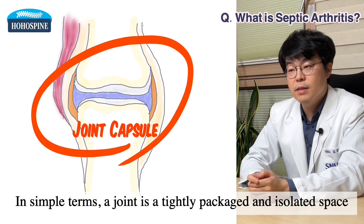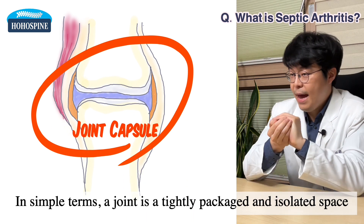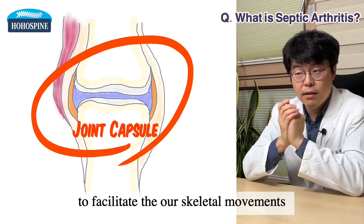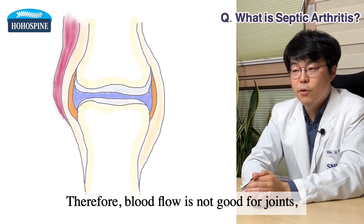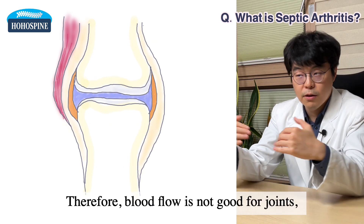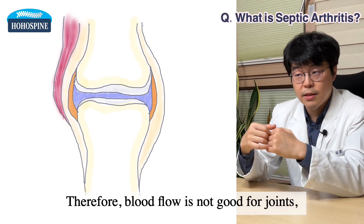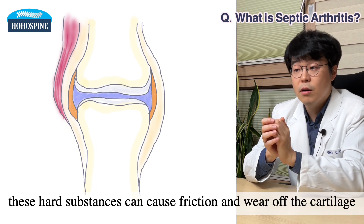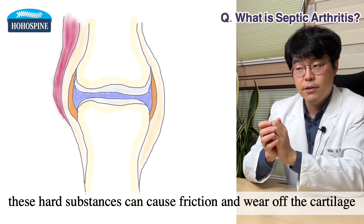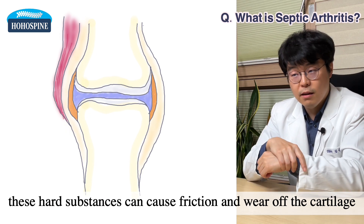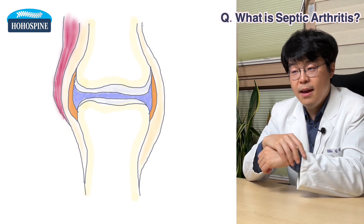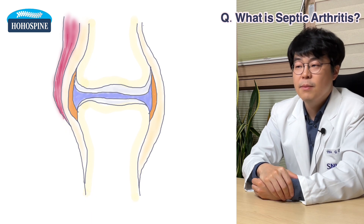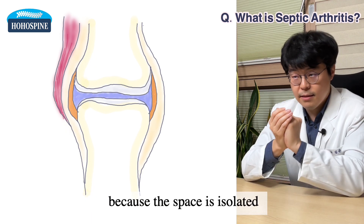In simple terms, a joint is a tightly packaged and isolated space to facilitate our skeletal movements. Therefore, blood flow is not good for joints, because if blood clots were to form inside, these hard substances can cause friction and wear off the cartilage. That is why joints are vulnerable to bacterial infections — because the space is isolated.